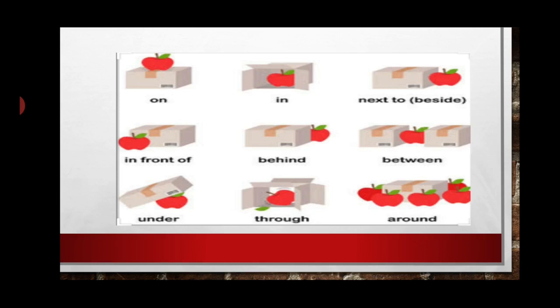Now, in this picture you can see a few small images. You can see a box and an apple. In one image, the apple is on top of the box, so we say the apple is on the box. In the second picture, the box is open and the apple is inside, so we say the apple is in the box.